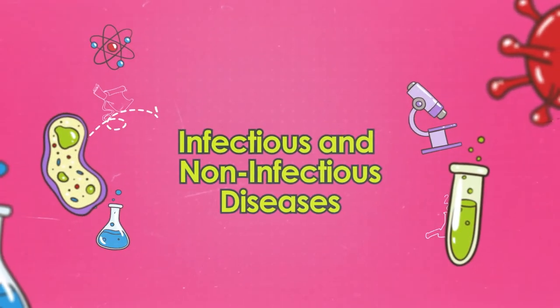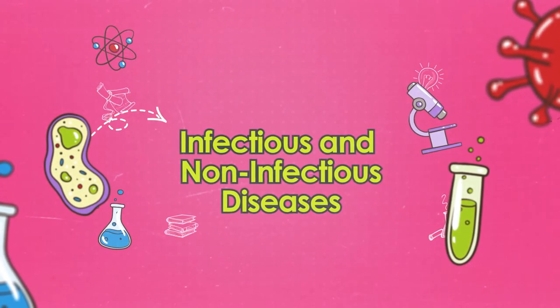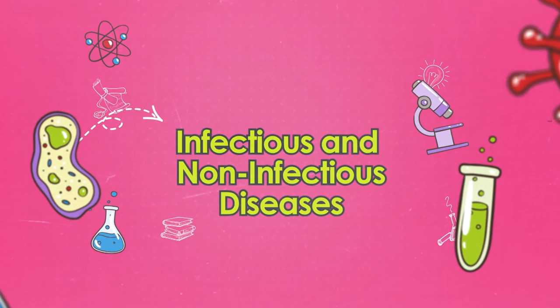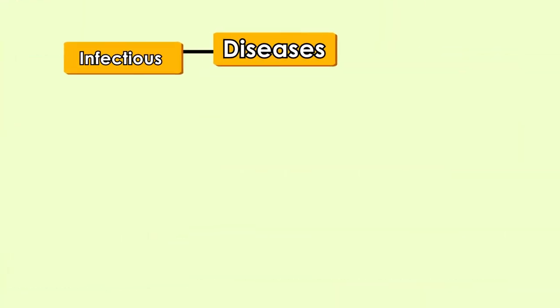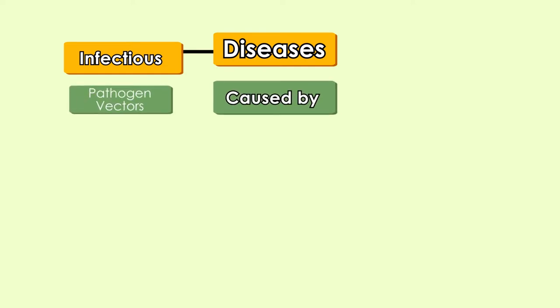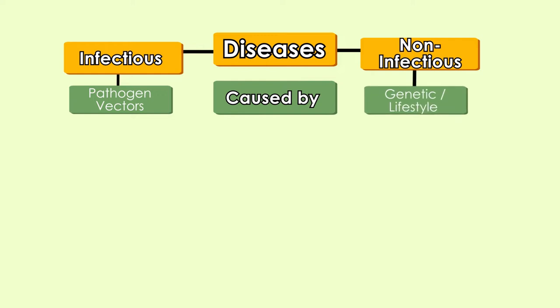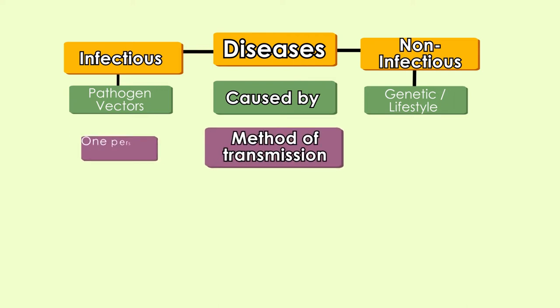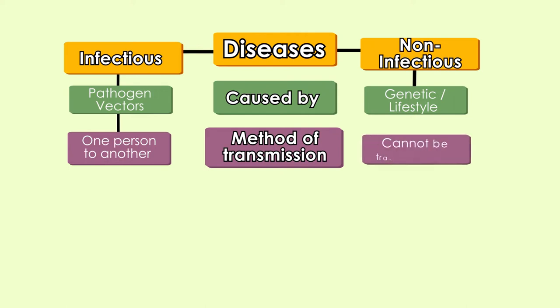First, let us compare the causes of infectious and non-infectious diseases. Infectious diseases are caused by dangerous pathogens, often carried by vectors. Non-infectious diseases are usually caused by genetics or by a person's lifestyle. Infectious diseases can be transmitted from one person to another, but non-infectious diseases cannot be transmitted to another person.